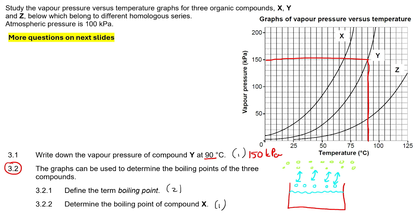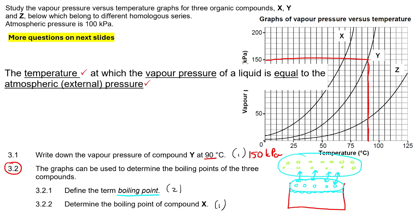So boiling point is the temperature at which the vapor pressure of a liquid becomes the same as atmospheric pressure. Straight from the memo: it is the temperature at which the vapor pressure of a liquid is equal to the atmospheric or external pressure. Think about that carefully, especially since they told us atmospheric pressure is 100.